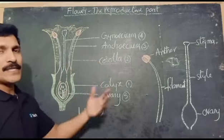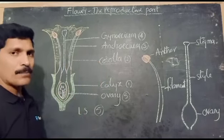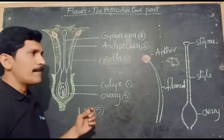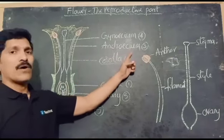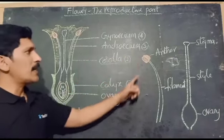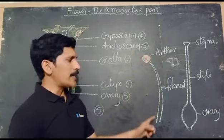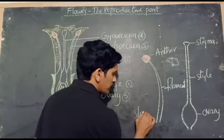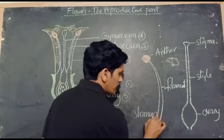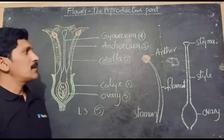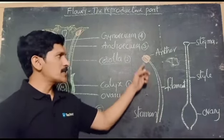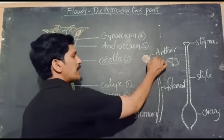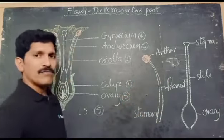The third one is the androecium. Androecium is the main male reproductive organ of the flower. When you observe the androecium, it is generally also called a stamen. The stamen possesses two parts: one is the anther, and the other stalk-like structure is called the filament.